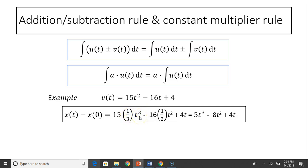That's how you get 1/3 t³. And the second one, this t, n equals 1. N equals 1 is 1/(1+1) which gives you 2, and t^(1+1) gives you 2. And over here, n equals 0 because anything to the 0 equals 1. So the original function is just 4t. So you simplify it. You have 5t³ minus 8t² plus 4t. To solve for x(t), you simply move the x at t equals 0 to the other side.